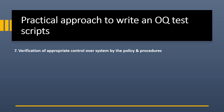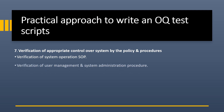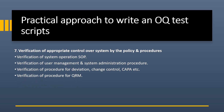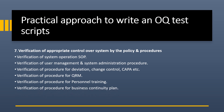Seventh is verification of appropriate control over the system through policies and procedures. This includes verification of: the system operation SOP; user management and system administration procedure; procedures for deviation, change control, and CAPA; procedure for quality risk management; procedure for personnel training; and procedure for business continuity plan.